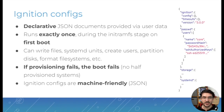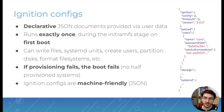Ignition configs themselves are declarative JSON documents, provided usually via user data on platforms. Ignition runs only once during the first boot, during the initial initramfs stage, even before file systems are mounted. It can do a lot of things: write files, systemd units, create users, partition disks, completely reformat file systems, change the layout, set up RAID, and more. One of the key mechanics of Ignition is that if the provisioning fails for whatever reason, then the boot will fail — so you either get a fully provisioned system or no system at all.